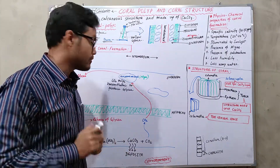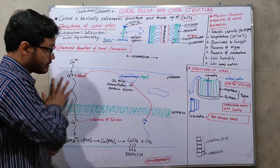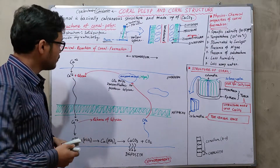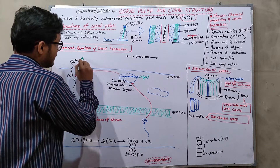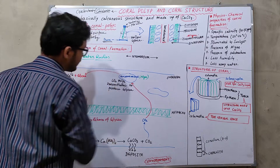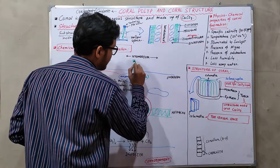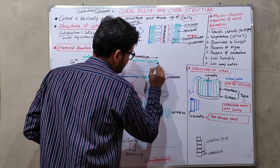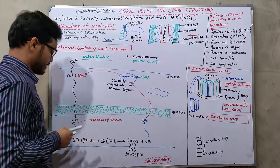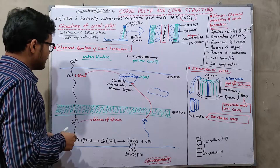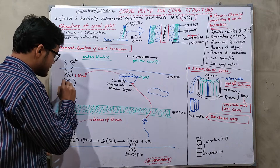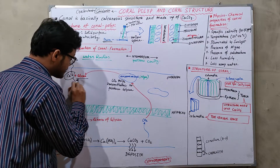Here is the chemical reaction that briefly explains the formation of coral. Whenever water rushes into the stomodium — the hollow cavity of coral-forming polyps — the calcium that is already present in that water enters the endoderm.